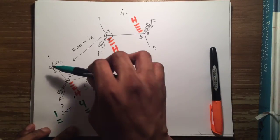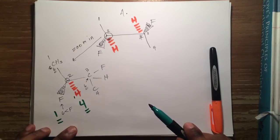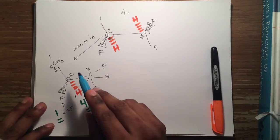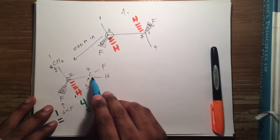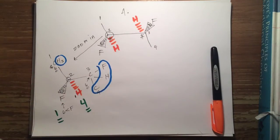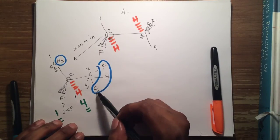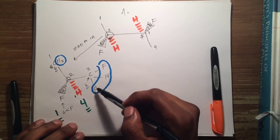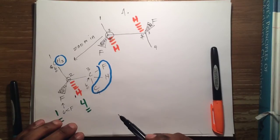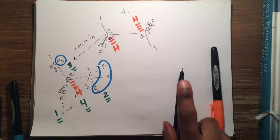The two carbons are the same atom, so you can't rank them by atomic number alone. You look at what's connected to each carbon. One carbon is connected to three hydrogens (CH₃), and the other is connected to a fluorine, a hydrogen, and a carbon. Since fluorine, carbon, and hydrogen outrank three hydrogens, that carbon gets priority 2 and the CH₃ gets priority 3.